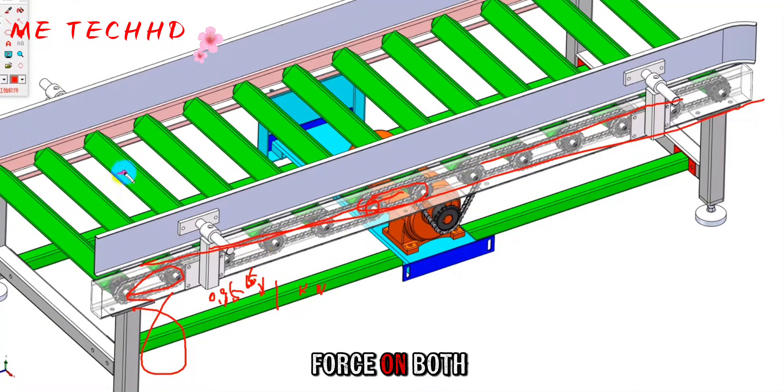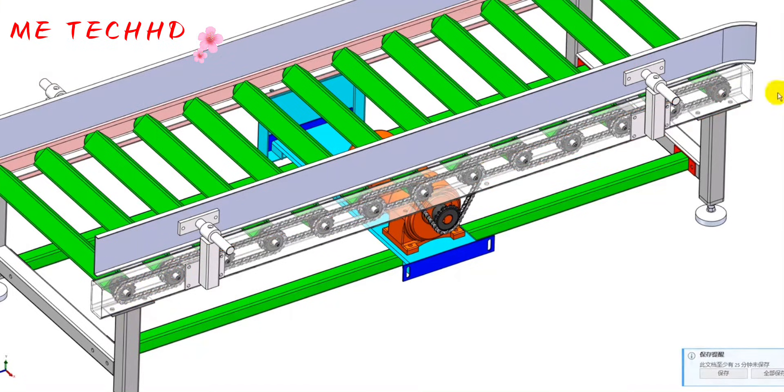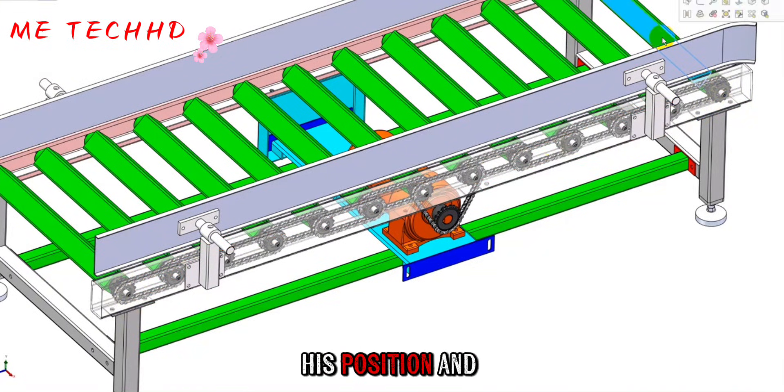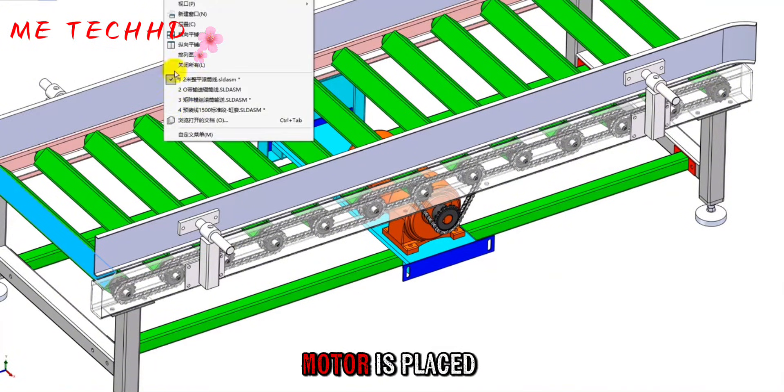When transmitting, the force on both sides from this side to that side is the same. If you put the motor on the side, the force at this position and the force here will make a big difference. So the motor is generally placed in the middle.